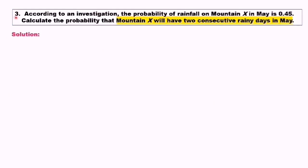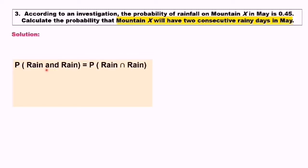Question number 3. According to an investigation, the probability of rainfall on mountain S in May is 0.45. Calculate the probability that mountain S will have 2 consecutive rainy days in May. To answer this question, we can apply the multiplication rule. The keyword is 'and,' which means we multiply. The probability of rainfall on the first day is 0.45, so 0.45 times 0.45 equals 0.2025.